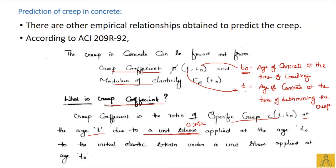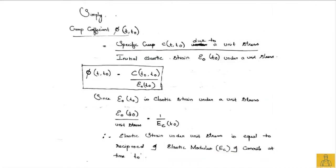For a duration of t minus t-naught, the concrete is subjected to a constant unit stress. So the creep coefficient φ equals the specific creep c due to unit stress applied at age t-naught, divided by the initial elastic strain ε-naught under unit stress. This can be written as: φ = c divided by ε-naught.